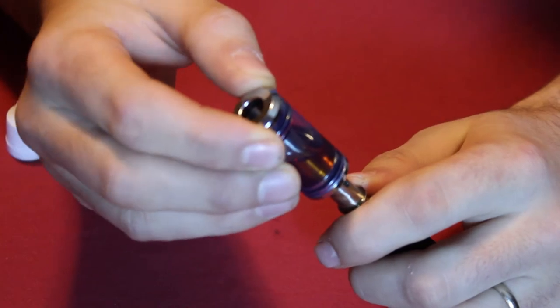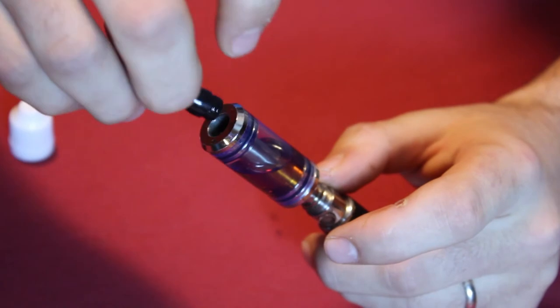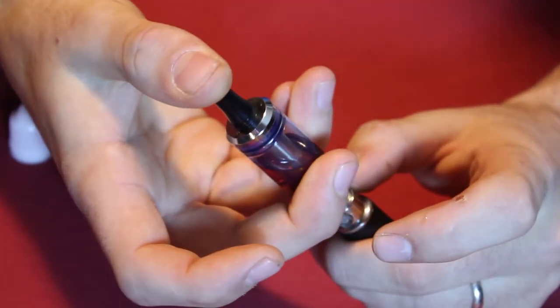Once you have it full, you just slide this down here. Put the drip tip back on. Make sure you're tight and about hand tight on your battery. And that's how you fill a DCT.